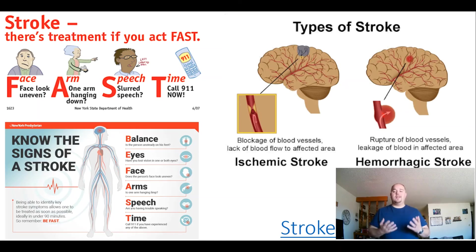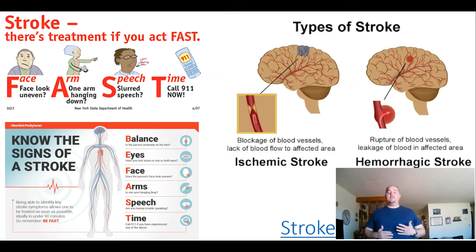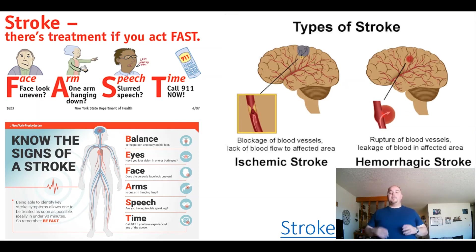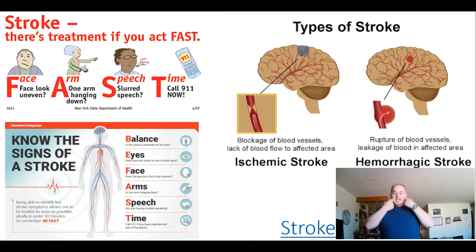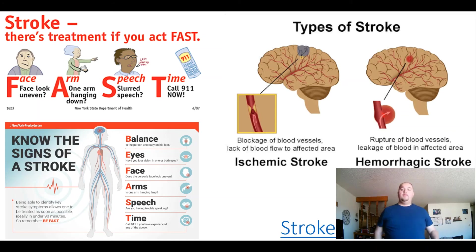With strokes, we're going to see hemiparesis — weakness on one side — or hemiparalysis — complete loss of movement on one side, with hemi meaning half. If we have an issue on the left side, it means the right brain is affected; an issue on the right side means the left brain is affected. So right side deficit equals left brain, and left side deficit equals right brain.